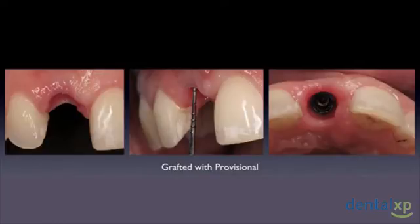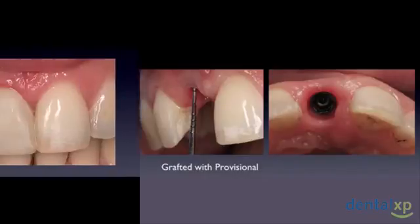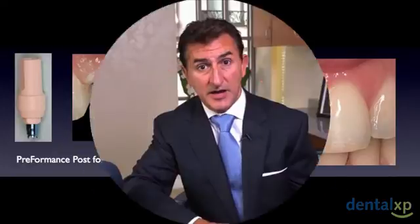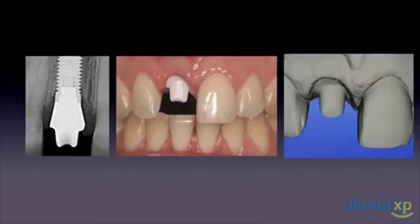Now the site is ready for our final CAD-CAM abutment. You can see how the tissue is healed, the proportion of the abutments is in a perfect position, and now we can actually scan our CAD-CAM abutment for milling of our final restoration. Once we've scanned our final abutment, we use a correlation technique of the provisional and the healed tissue to make a perfect tooth that matches the original provisional.